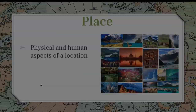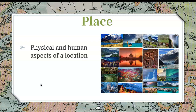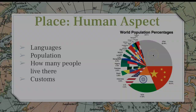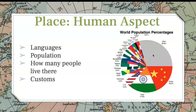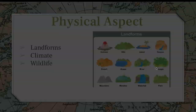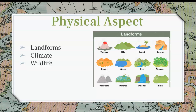Our last theme is place. Place has to do with the physical and human aspects of a location. The human aspect deals with what languages they speak, what the population is, how many people live, work, or go to school there, and what their customs are — here's a population pie chart. The physical aspect of place deals with landforms, climate, and wildlife; to the right are a few landforms and natural resources.